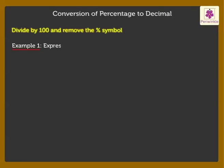Let's express 48% as a decimal. Here we divide 48 by 100 and remove the percentage symbol. Thus, we get 48% is equal to 48 upon 100. We can write this decimal fraction as a decimal number by moving the decimal point two places to the left, as the denominator has two zeros. Thus, 48% is equal to 0.48.